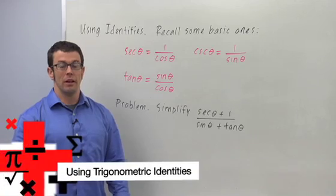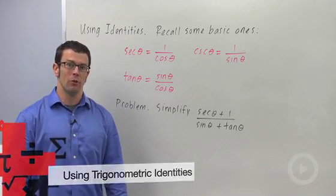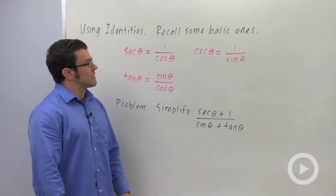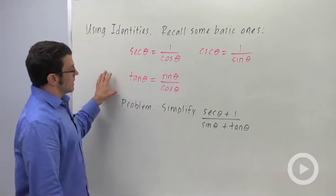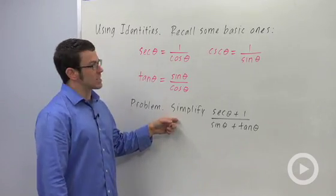Trigonometric identities are really important, as you've probably already seen if you've used them to graph. One of the things that you'll find in your homework occasionally is problems that ask you to simplify a trig expression.